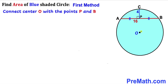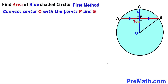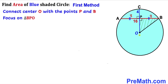Let's connect center O with points P and B, as you can see in the next diagram. Recall the perpendicular bisector theorem: if one chord is a perpendicular bisector of another chord, then the first chord passes through the center — so CO is the radius of the circle, and angle OPB is 90 degrees. Since AP equals BP and AB is 16, both AP and PB equal 8 units.